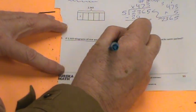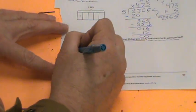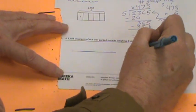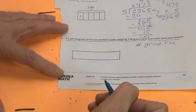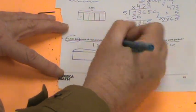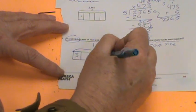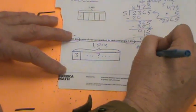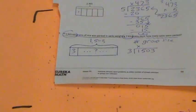If 1,503 kilograms of rice was packed in sacks weighing 3 kilograms each, how many sacks were packed? We don't know the number of groups. So here comes our tape diagram. We know the whole, 1,503. We're putting them into 3 kilograms each. So we took 1,503 divided by 3. I'm going to get you started, but I think you can do the rest on your own. The 1 can't be divided by 3, so I'm going to put the X there. Go ahead and try to figure that one out on your own. Think about it. Take your time.